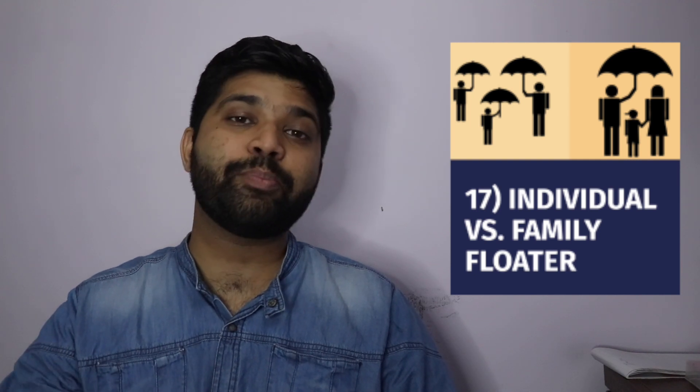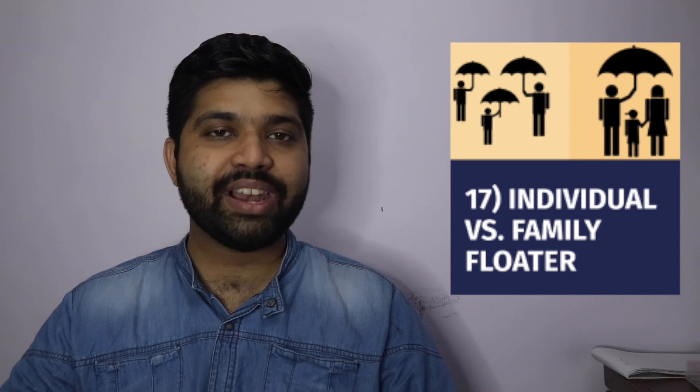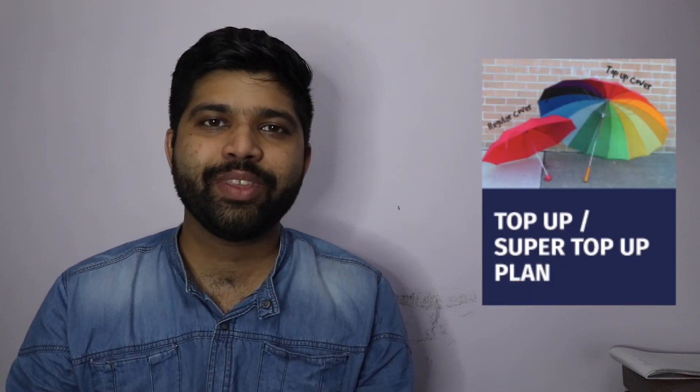The 17th point is the difference between an Individual Policy and a Family Floater Policy. Many people take separate individual policies for each family member, which results in a very high premium. If you have a family, always take a family floater policy — for example, father, mother, and two children under a common ten-lakh cover. The entire ten-lakh amount can be claimed by any of the four members, rather than each person holding ten lakhs independently, which saves a lot on premium.